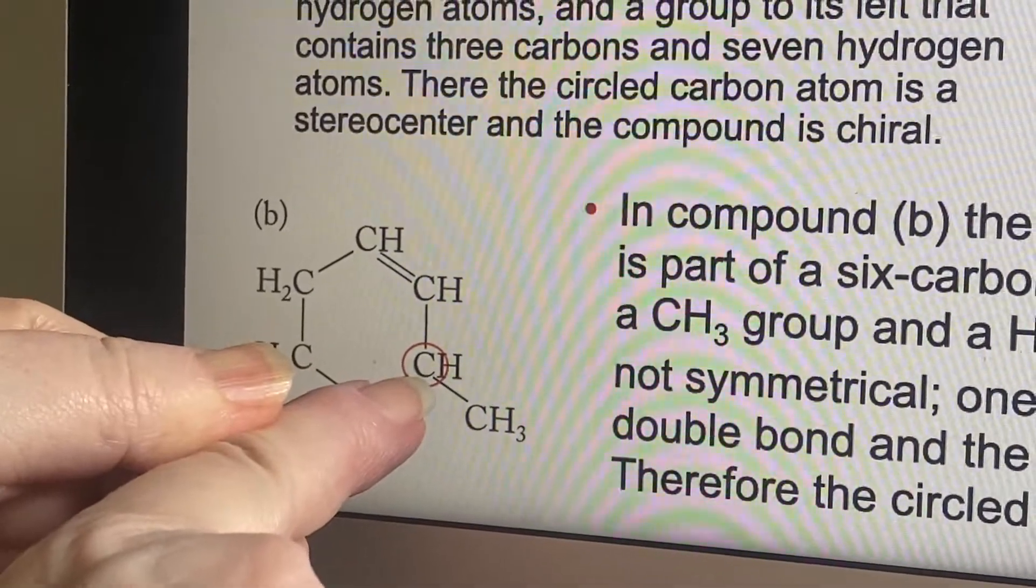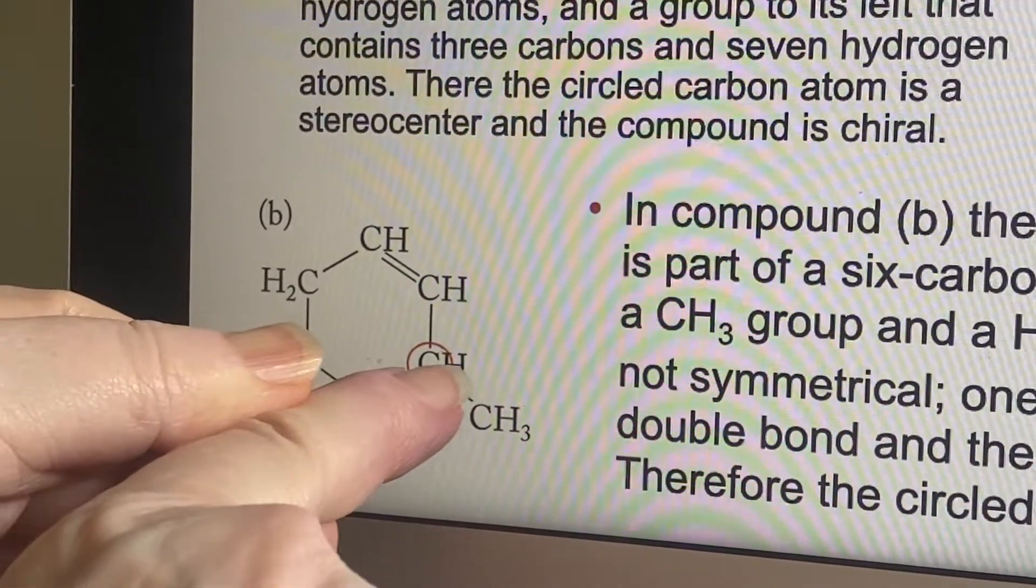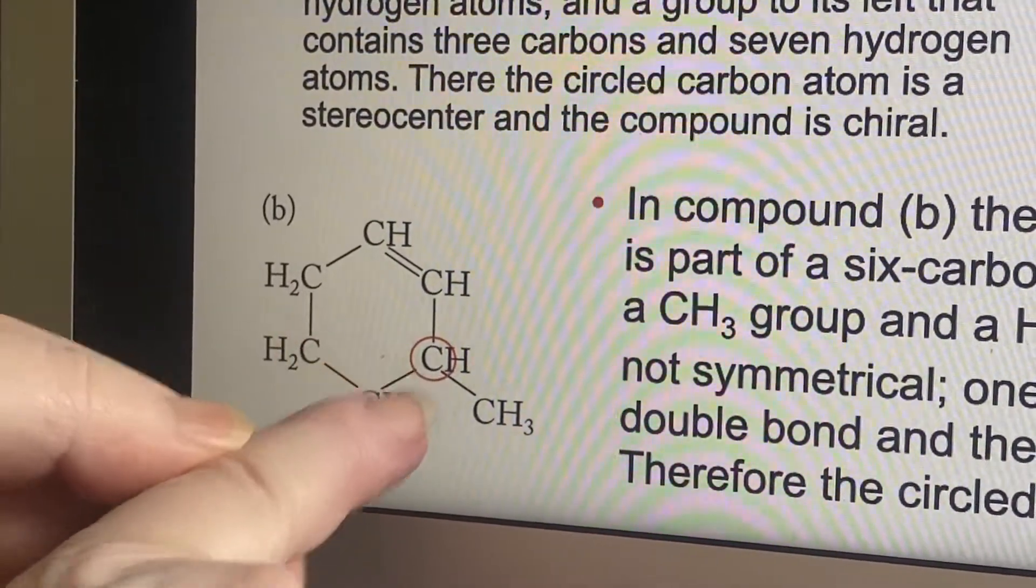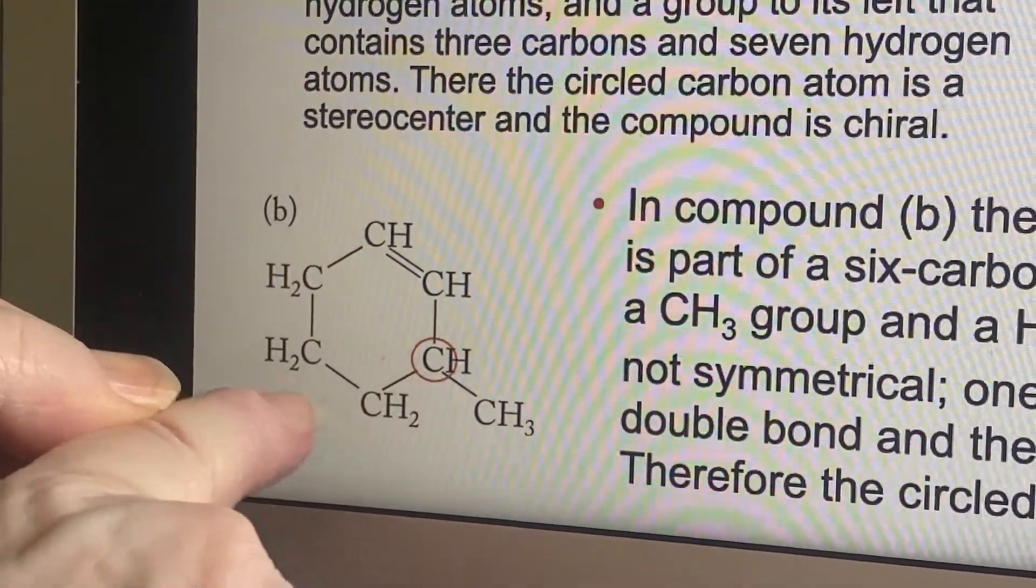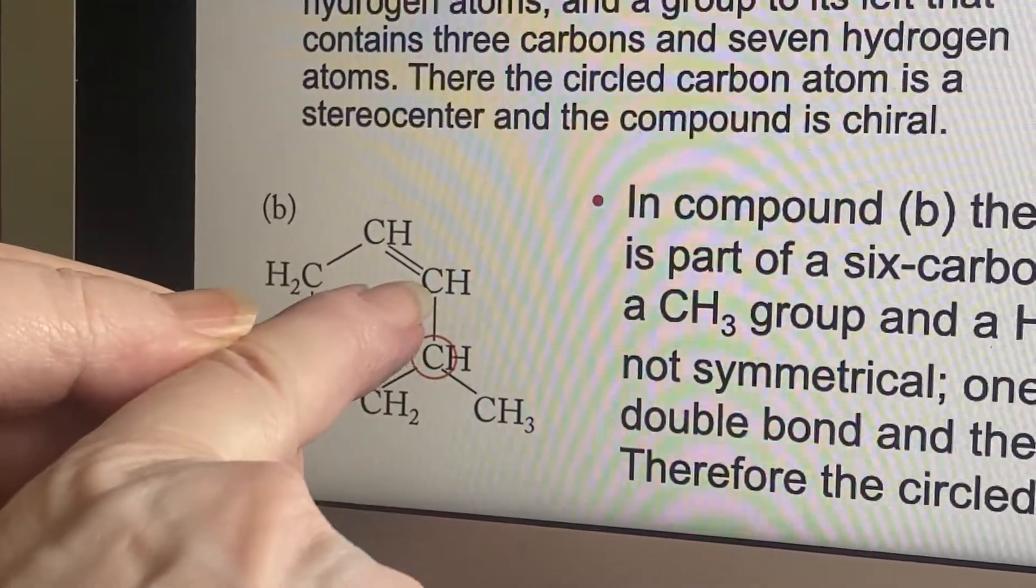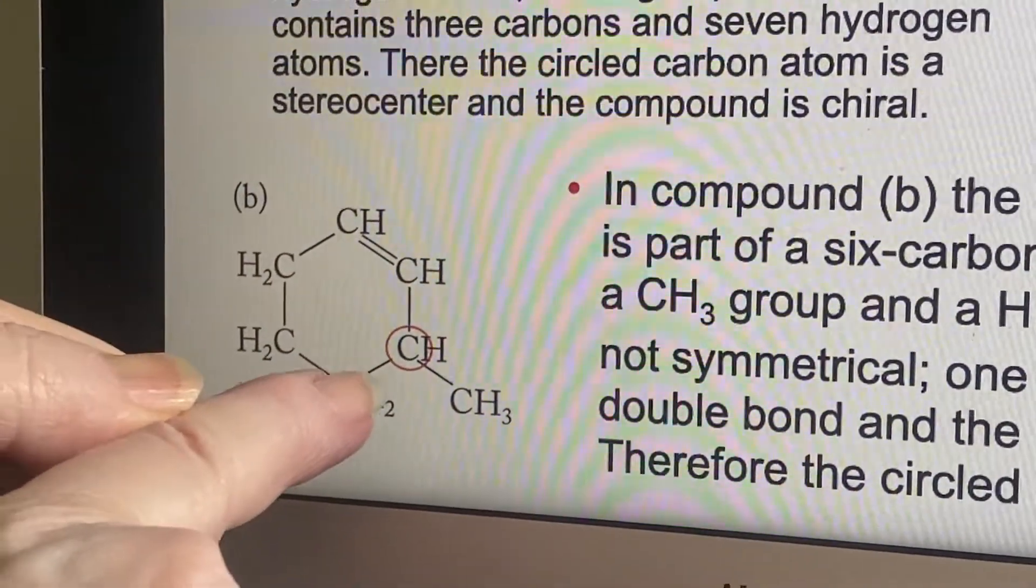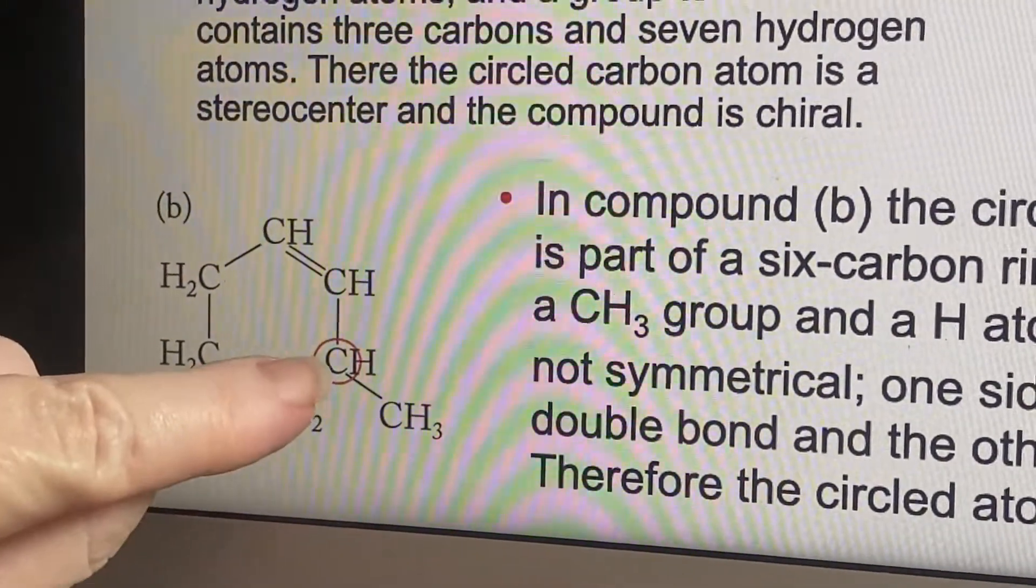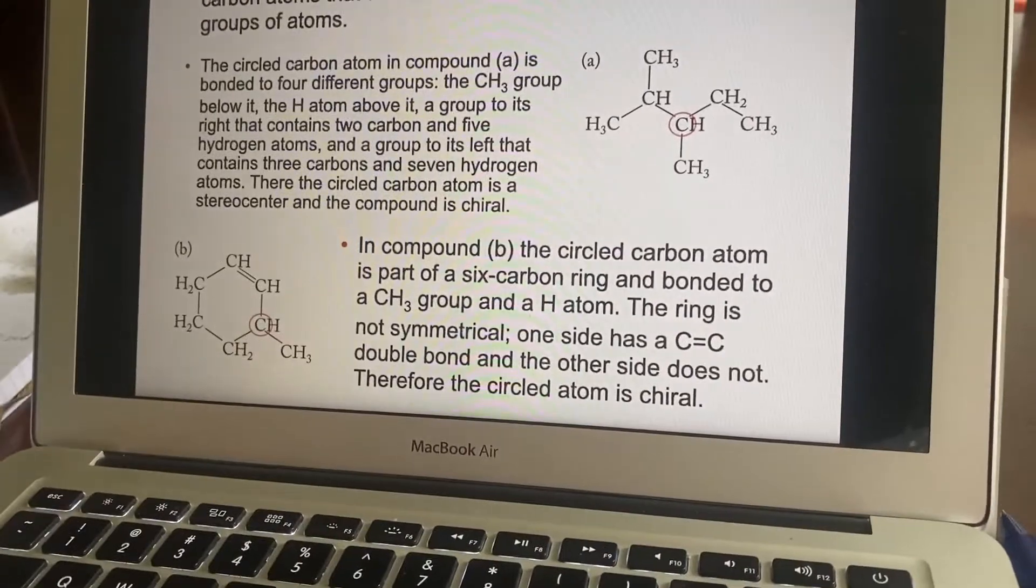But this guy is bonded to this, well, let's start with the simplest. It's bonded to a hydrogen. Then it's bonded to a methyl group. And then going this way looks different than going that way because going this way, the carbon carbon has only one hydrogen on it. While going this direction, carbon has two hydrogens on it. So that is a chiral center, also called a stereocenter. That's what you need to know.